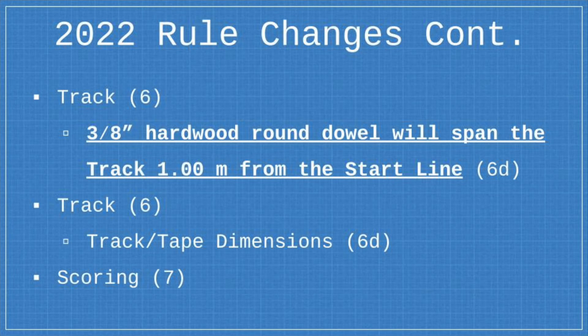Looking at the rest of the track details, they also cover track and tape dimensions. The target distances have changed — instead of 9 to 12 meters, it's now less than 5. Scoring is the same as last year.